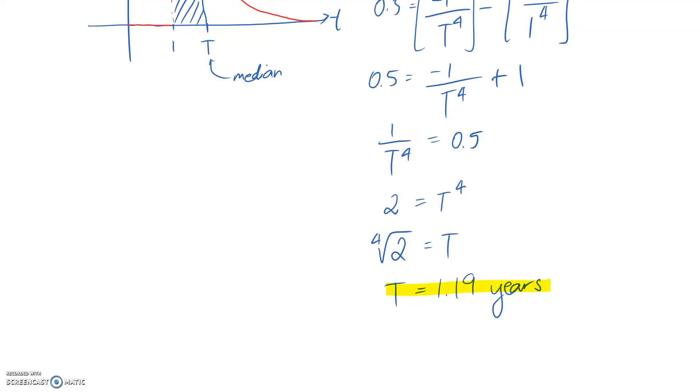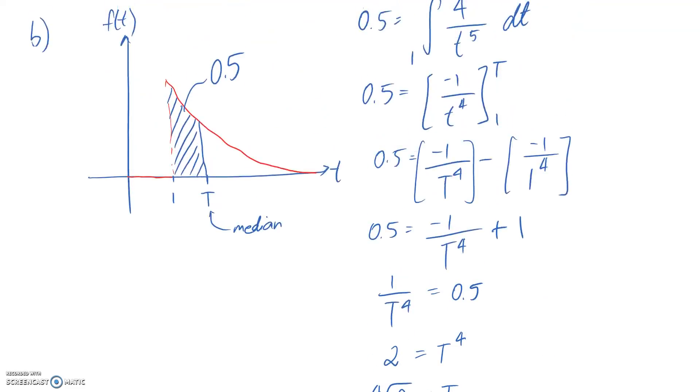So that's our answer. So what that's saying is that, looking at our graph, up until T is equal to 1.19, 50% of the components will have failed, meaning that 50% are still working. And then past this, you're passing over the median mark, so that means that more than 50% are going to have failed. So that's all there is in terms of this video, and I'll see you in another one.